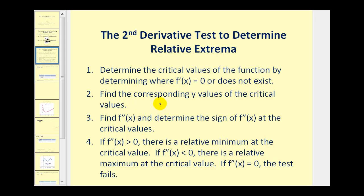Then we'll find the corresponding y-values of the critical numbers. Then we'll find the second derivative and determine the sign of it at the critical numbers. If the second derivative is positive, the function is concave up and we have a relative minimum. If the second derivative is negative, the function is concave down and we have a relative maximum at that critical number.